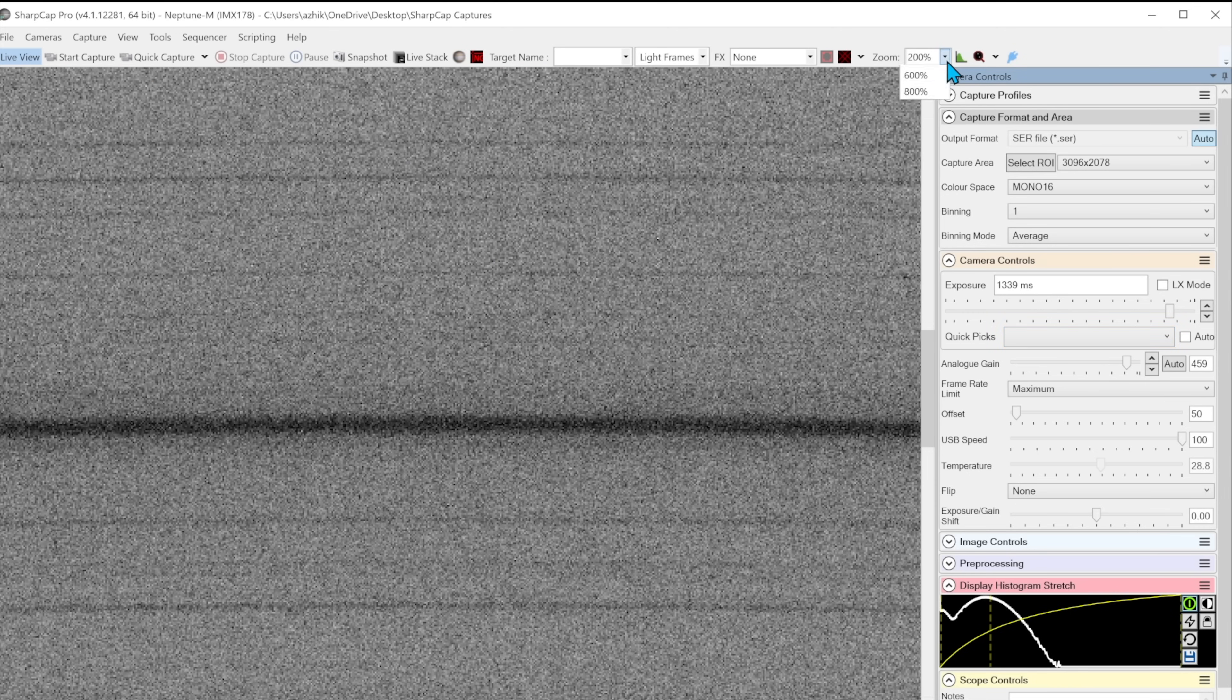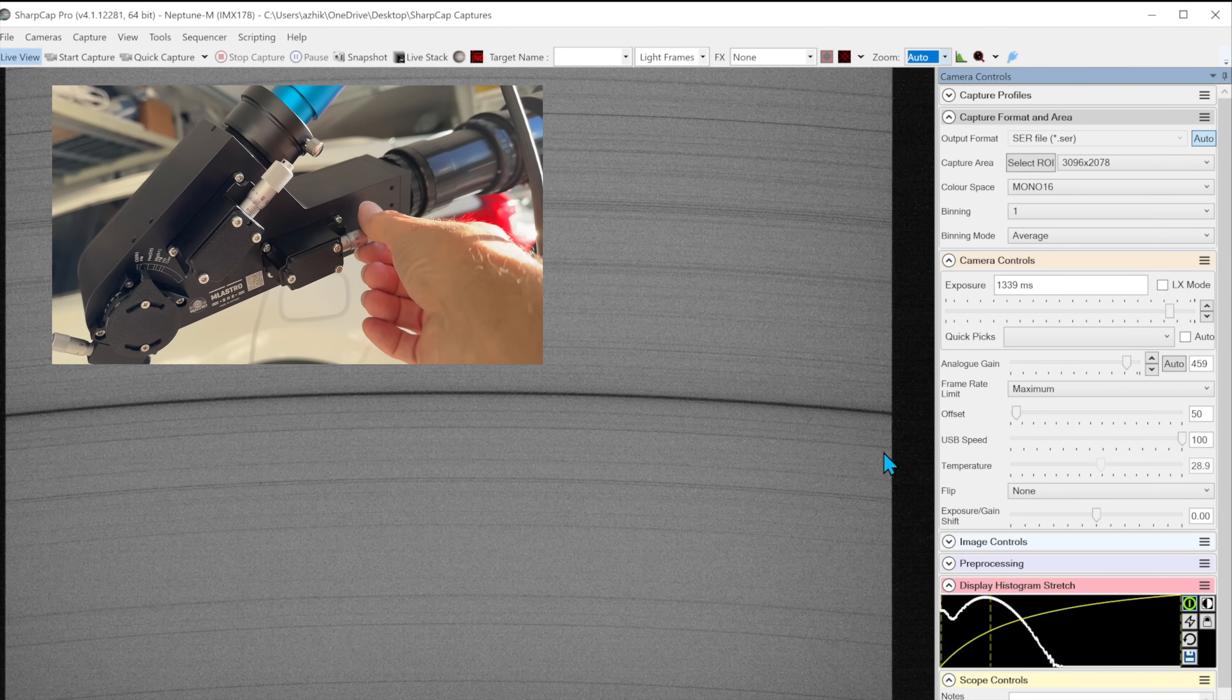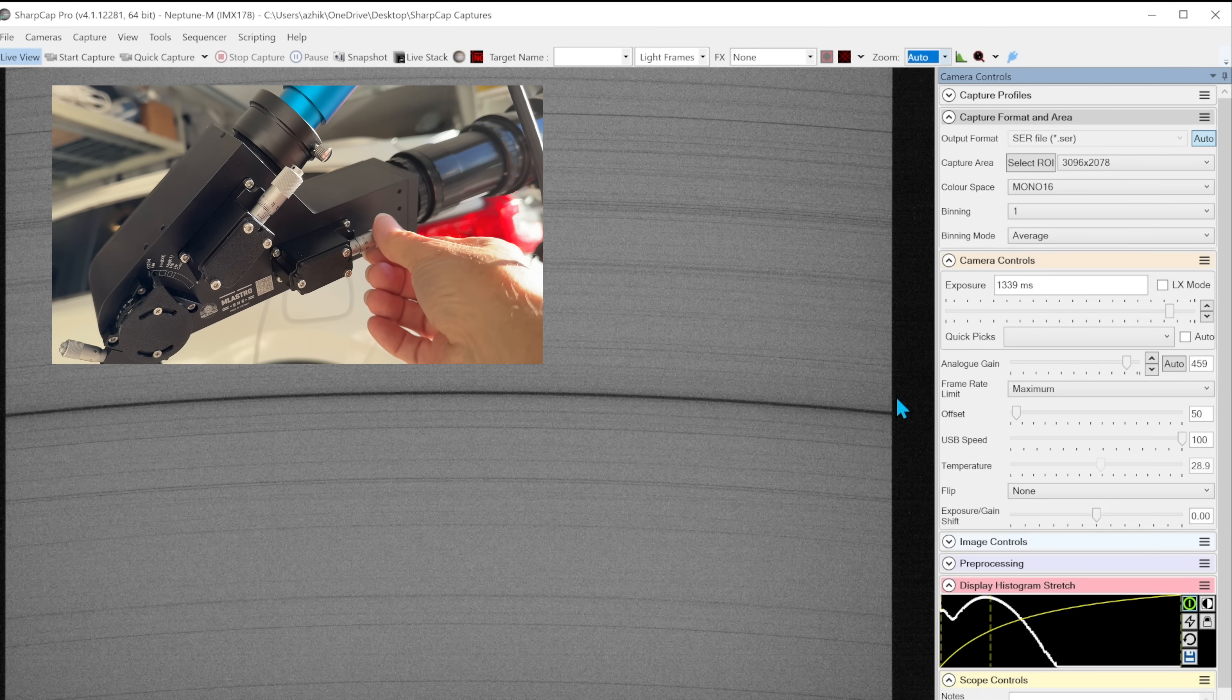You might use the collimator to find focus on the vertical left or right edge so it's sharp, again using 200% magnification.